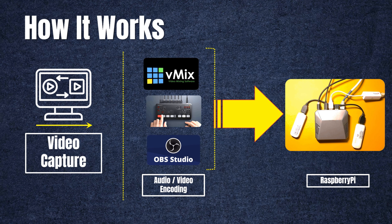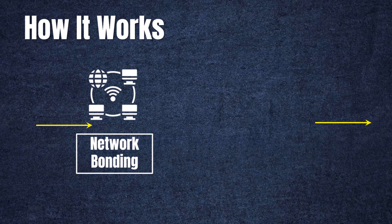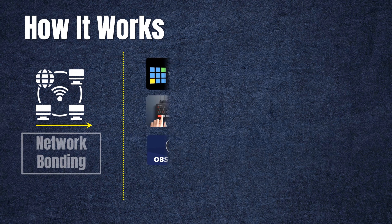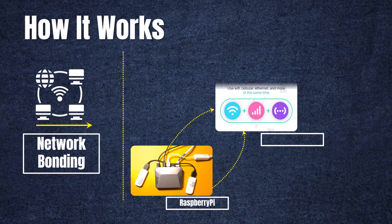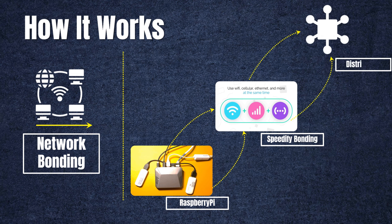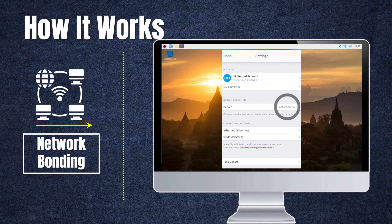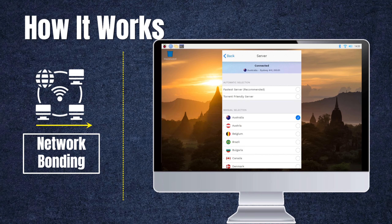This is where the magic happens. Our Raspberry Pi, equipped with its powerful bonding and streaming capabilities, comes to life. Step 2: Network bonding. The true magic of our setup lies in the process of network bonding. We're leveraging Speedify, an advanced VPN service, to combine multiple internet connections simultaneously. By bonding Wi-Fi, Ethernet, and even cellular connections, we maximize our upload speed and ensure a reliable internet connection. Speedify's intelligent load balancing distributes the data across the available connections, optimizing bandwidth usage for a smoother streaming experience.